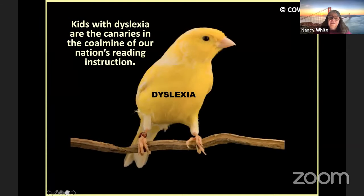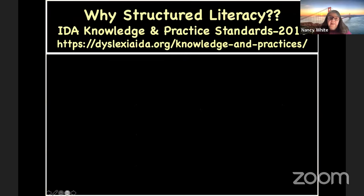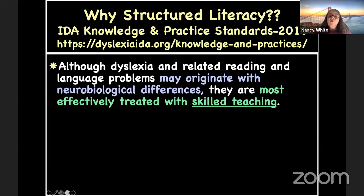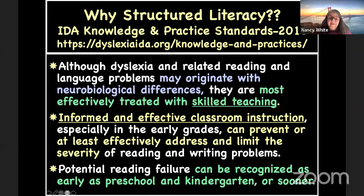Reading scientists estimate that 95% of all children can be taught to read at a level constrained only by their reasoning and listening comprehension abilities. Kids with dyslexia are the canaries in the coal mine of our nation's reading instruction, even if some people want to believe they don't exist. If you're not familiar with IDA's Knowledge and Practice Standards, please check them out, because they will say a lot more than I'm able to say in our 90-minute session. Potential reading failure can be recognized as early as preschool and kindergarten — not with formal diagnosis, but identifying kids who need help sooner rather than later.